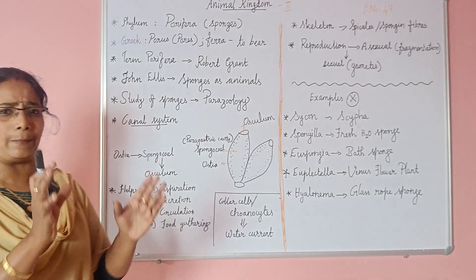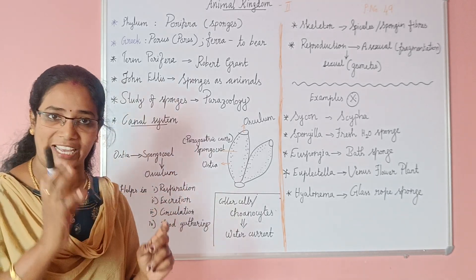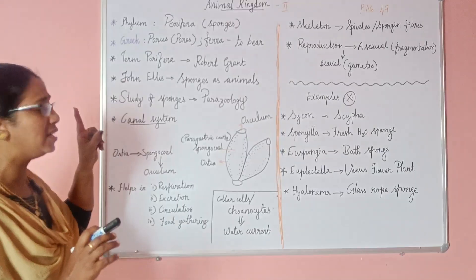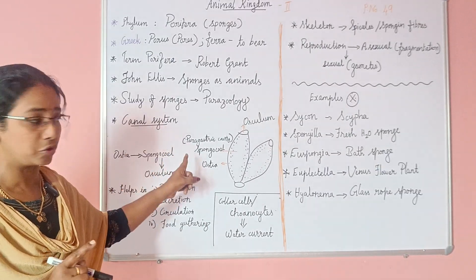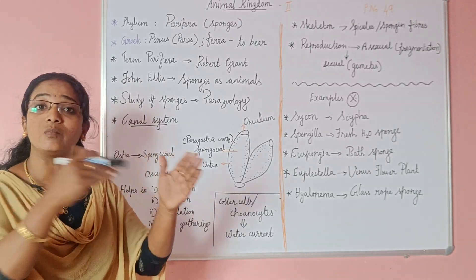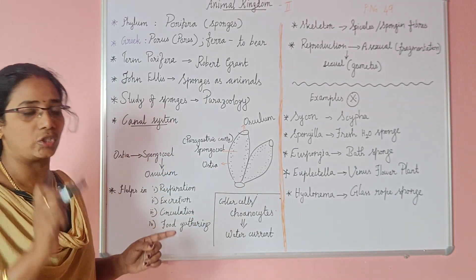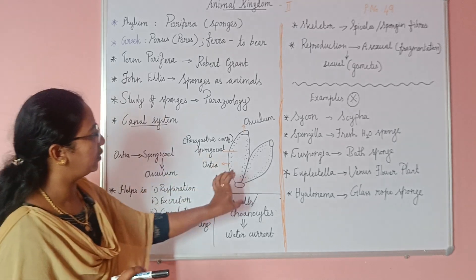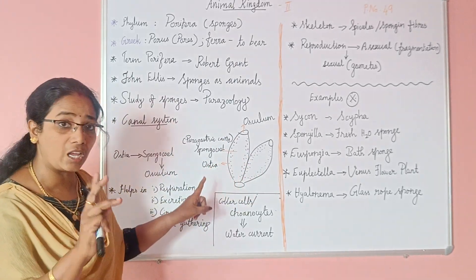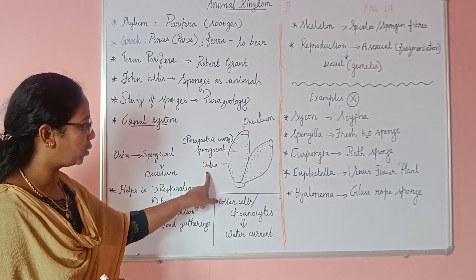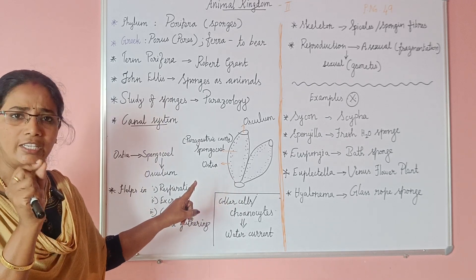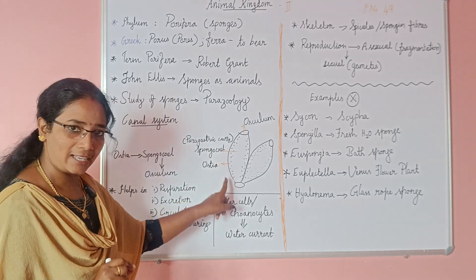There is a peculiar character in the phylum Porifera — the canal system. In the canal system, there are three important parts. The first is the ostia, which are small pores in the body.